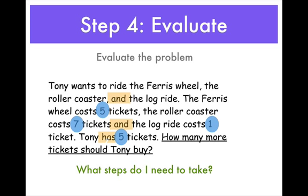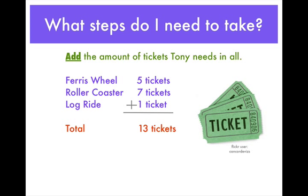Our next step is to evaluate. Let's evaluate the problem — I have to ask myself, what steps do I need to take? We've circled the key numbers, underlined the question, and boxed the action words. So let's put those together. Add the amount of tickets Tony needs in all: the Ferris wheel is 5 tickets, the roller coaster is 7 tickets, and the log ride is 1 ticket. All together, 5 plus 7 plus 1 equals 13 tickets. So Tony needs 13 tickets in all to ride all 3 rides.